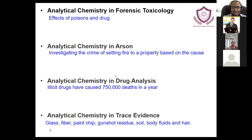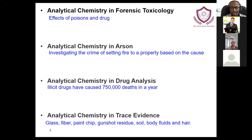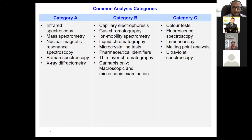If you look at how analytical chemistry helps in toxicology, you can check the effects of poisons, monitor drug adulteration, and measure drug toxicity — that is forensic toxicology. If you apply analytical chemistry to arson — investigating the crime of setting fire to a property — that is forensic arson investigation. In drug analysis, listed drugs have caused more than 750,000 deaths in a year, so analytical chemistry applied there is illicit drug monitoring. Applied to trace evidence like glass, fiber, paint chips, gunshot residue, soil, body fluids, and hair — that is trace evidence identification.